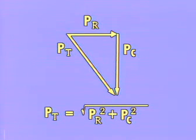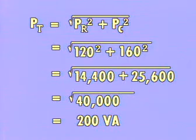The total apparent power by the Pythagorean theorem is equal to the square root of the quantity P sub R, real power, squared, plus P sub C, reactive power, squared. Thus, the total apparent power in our circuit, 200 volt amperes, should be equal to the square root of 120 watts squared plus 160 Vars squared.